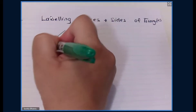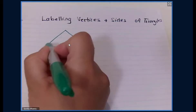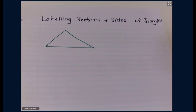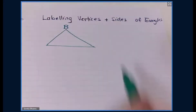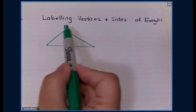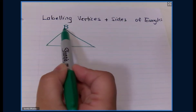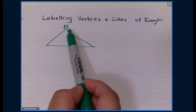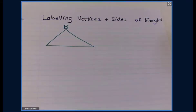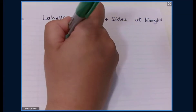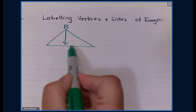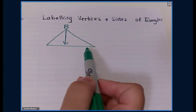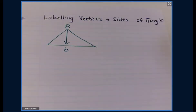For example, if we have a triangle and we call this vertex B — remember that a vertex is any point where two lines are meeting, so this could also be angle B — then directly opposite that angle or vertex is going to be this side here, and it's labeled with the lowercase b.